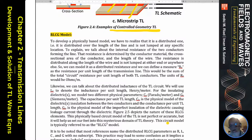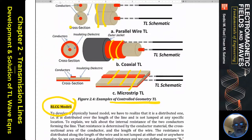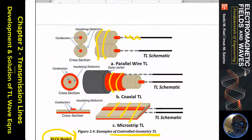We are going to use a circuit theory approach in developing the analysis, using the RLCG model. We are looking at the physical properties of those wires and the insulation material. The wires have some internal resistance, some inductance from the developing magnetic field, and some capacitance between the wires.